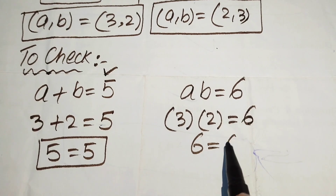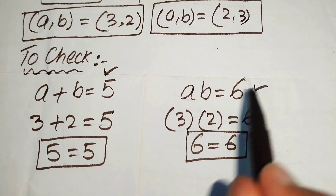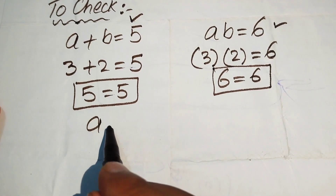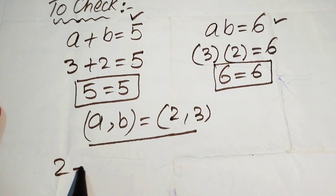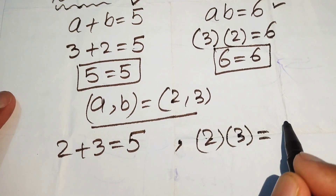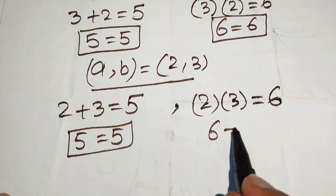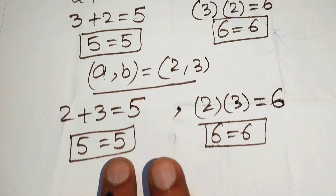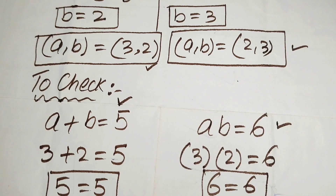Similarly, verifying the second solution (a, b) = (2, 3): 2 plus 3 equals 5, and 2 times 3 equals 6. Both equations are satisfied. So both solutions are verified, and these are the only two solutions of the given equation. Thank you so much for watching this video — please subscribe to my channel for more exciting videos.